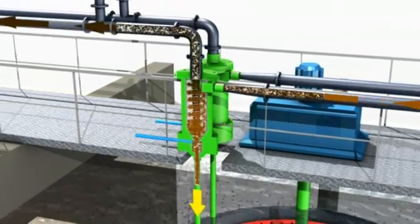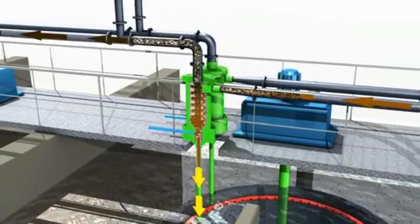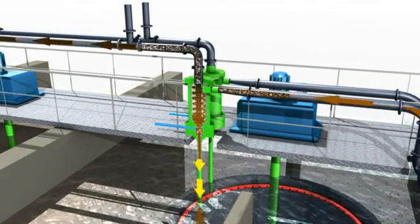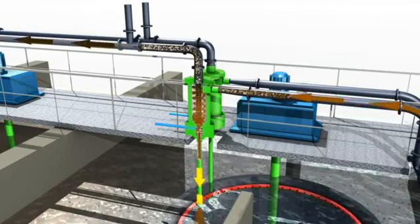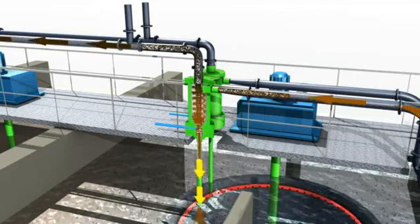The clean microsand is recovered at the bottom of the hydrocyclone and re-injected into the turbomix draft tube for reuse, while the lighter-density sludge is discharged out of the top of the hydrocyclone for thickening or disposal.